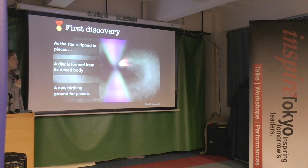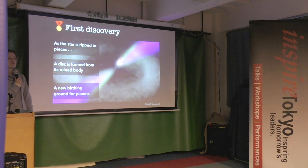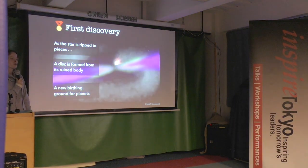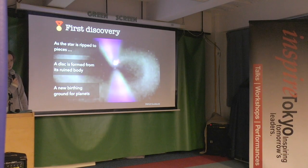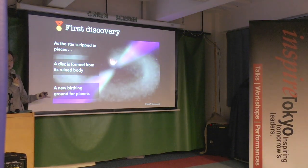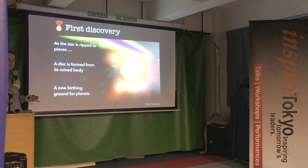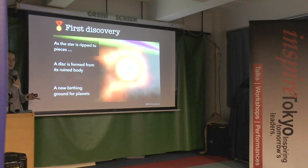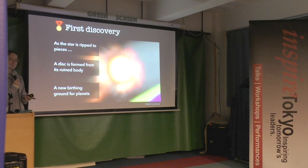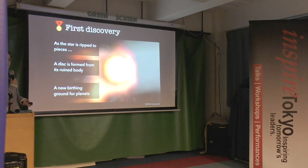As the companion star was ripped to pieces by the pulsar, a new disc formed from its ruined body to orbit the pulsar, and from this disc planets began to form. These new planets are actually from the remains of a star that was ripped apart — a brand new protoplanetary disk formed around the pulsar, and planets were reborn from these ashes. It's actually pretty morbid.